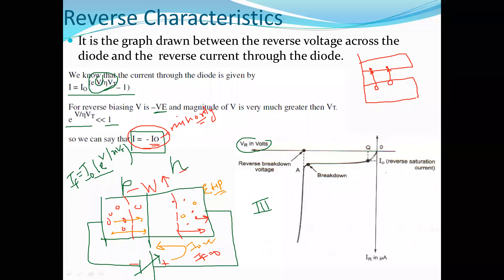This constant current I0 flows in the reverse direction, and a approximately constant line is drawn in the third quadrant. Initially it is zero, then a small constant current flows due to minority charge carriers — this is the reverse current. But if we increase the reverse voltage further, at one point the covalent bonding will break and a large current will start to flow.